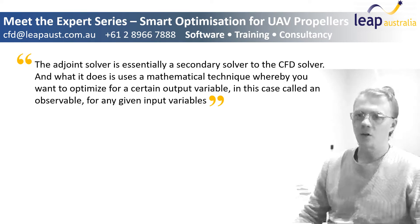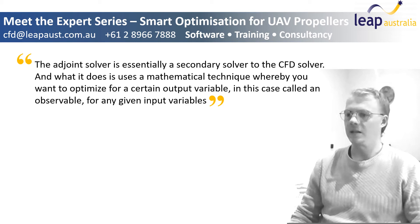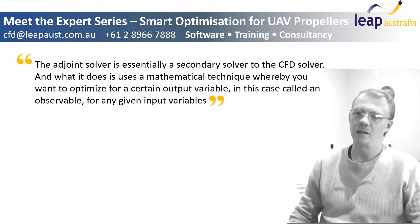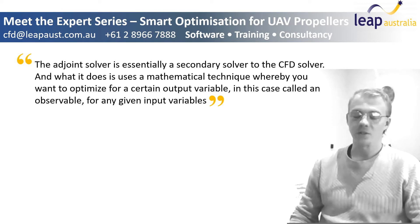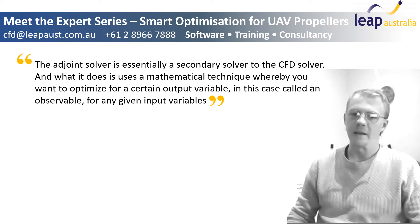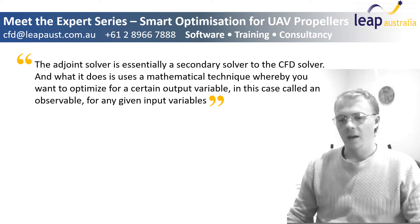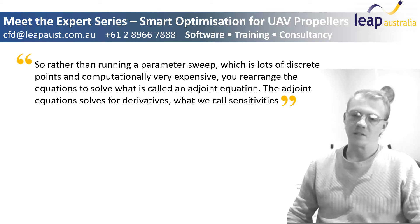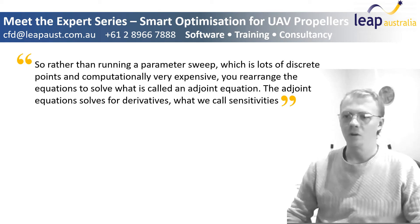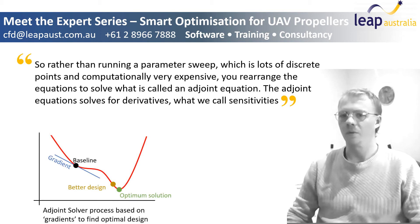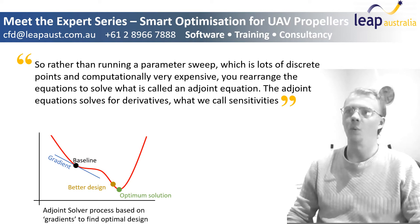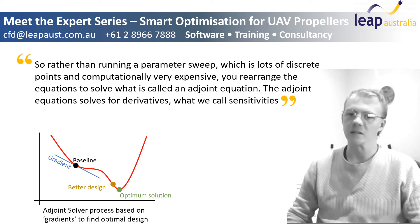The adjoint solver is essentially a secondary solver to the CFD solver. What it does is use a mathematical technique whereby you want to optimize for a certain output variable — in this case called an observable — for any given input variables. Rather than running a parameter sweep, which involves lots of discrete points and is computationally very expensive, you rearrange the equations to solve what's called an adjoint equation. The adjoint equation solves for derivatives, what we call sensitivities.